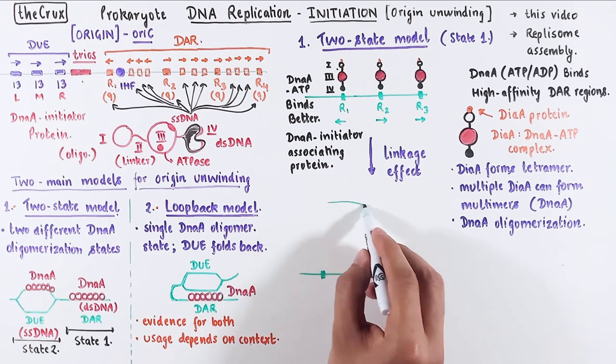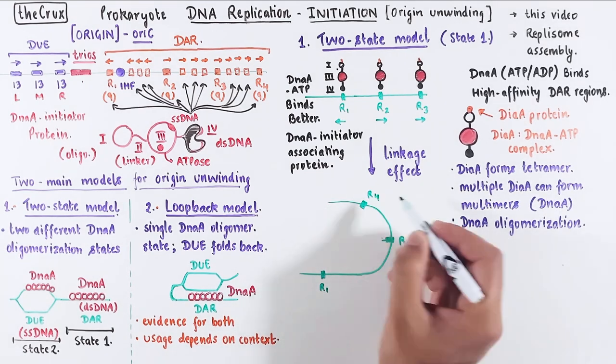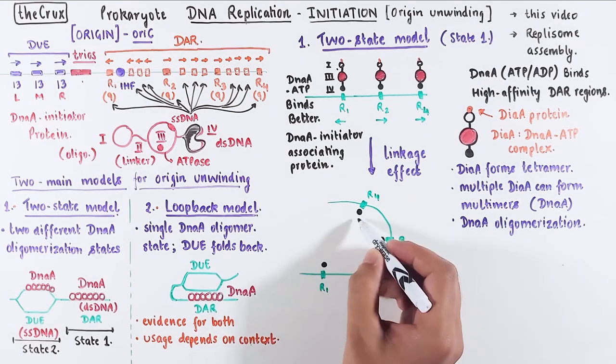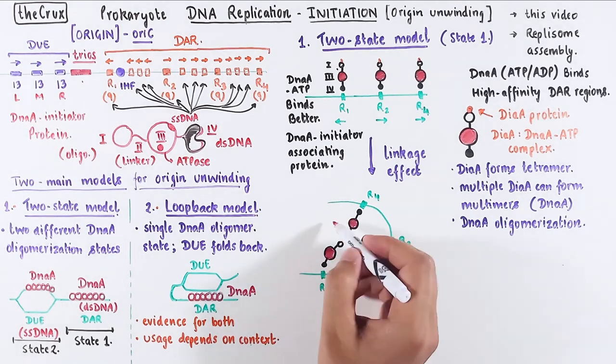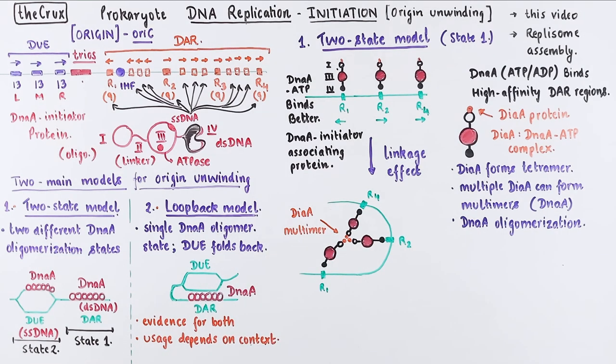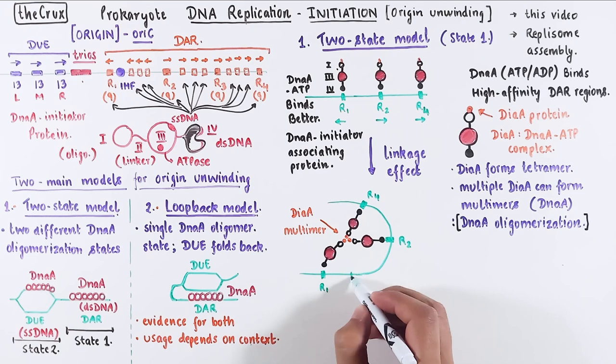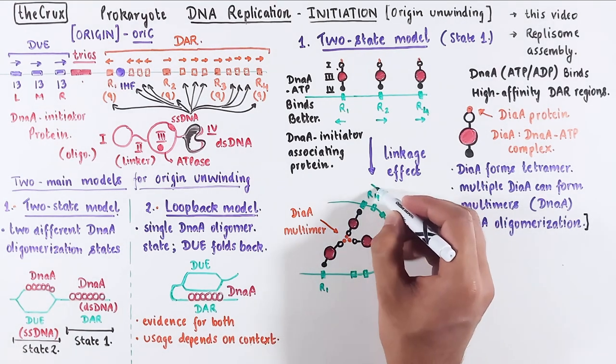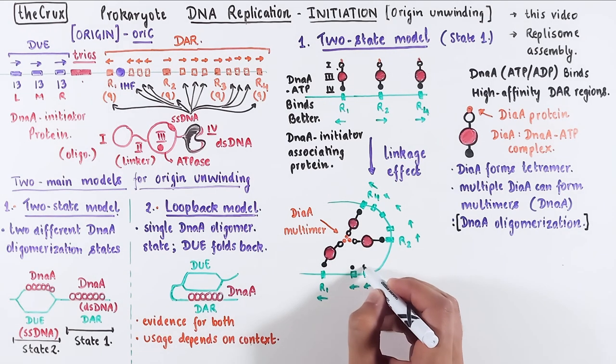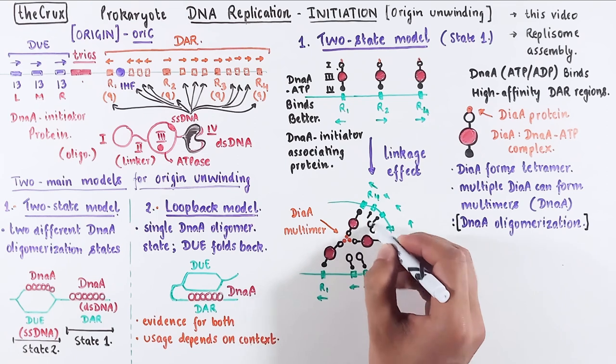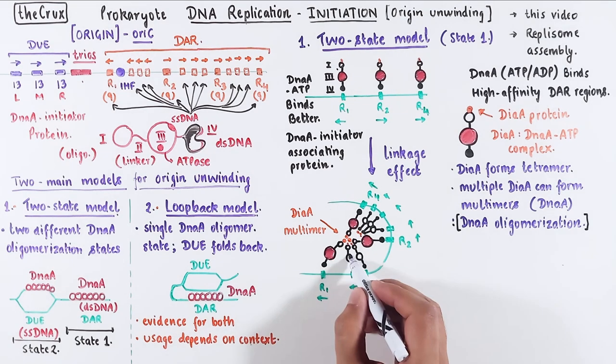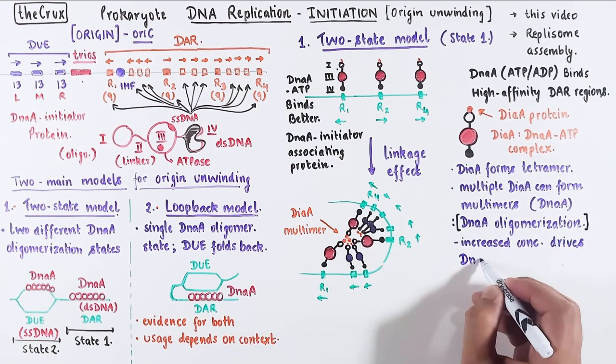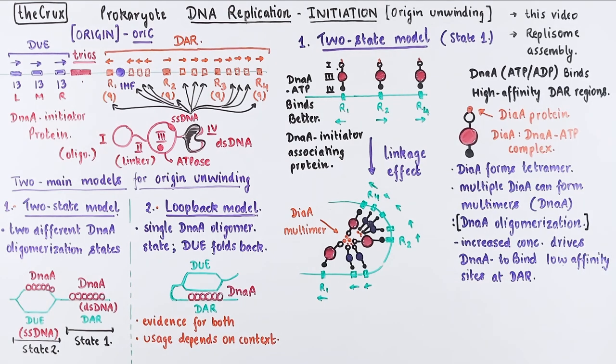So let's understand this linkage effect visually. Since multiple DiaA can come together, it can force the aggregation of DnaA proteins at the DAR. It is like a crowding agent. Once this DiaA forms multimers, it can further force the DnaA oligomerization at the DAR. Recall that there are many internal sites at the DAR that are low affinity sites for DnaA. Once this DiaA-mediated linkage is forced, more DnaA is recruited at the DAR, and it occupies the low affinity sites. And these new DnaA proteins also have DiaA associated with them. So DiaA further stabilizes the DnaA complexes at the DAR region. This mechanism of DnaA association is probably concentration-driven.